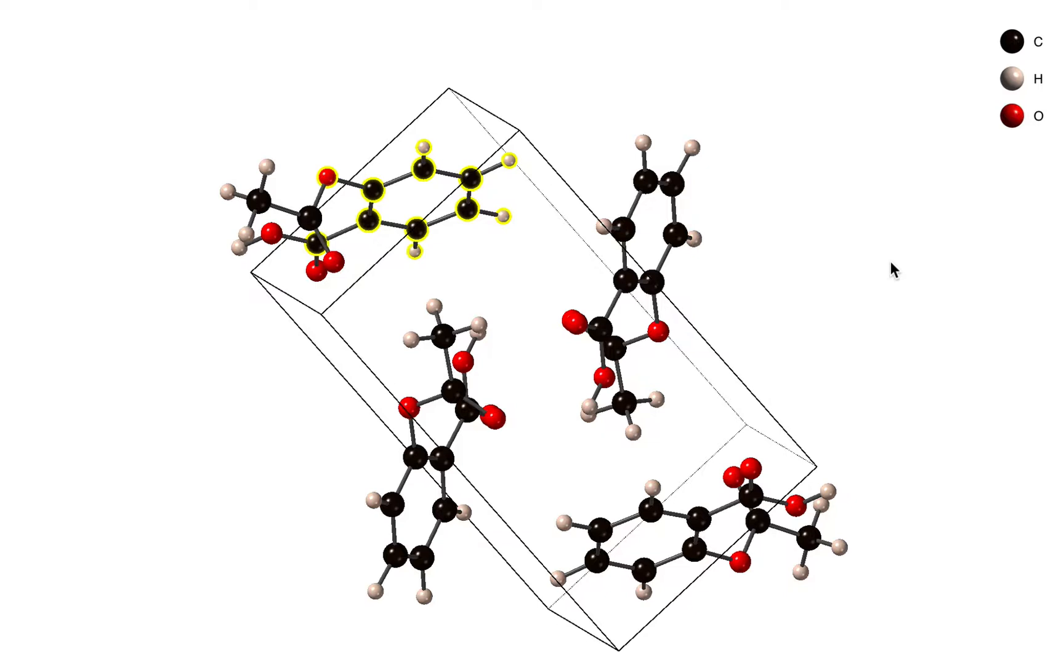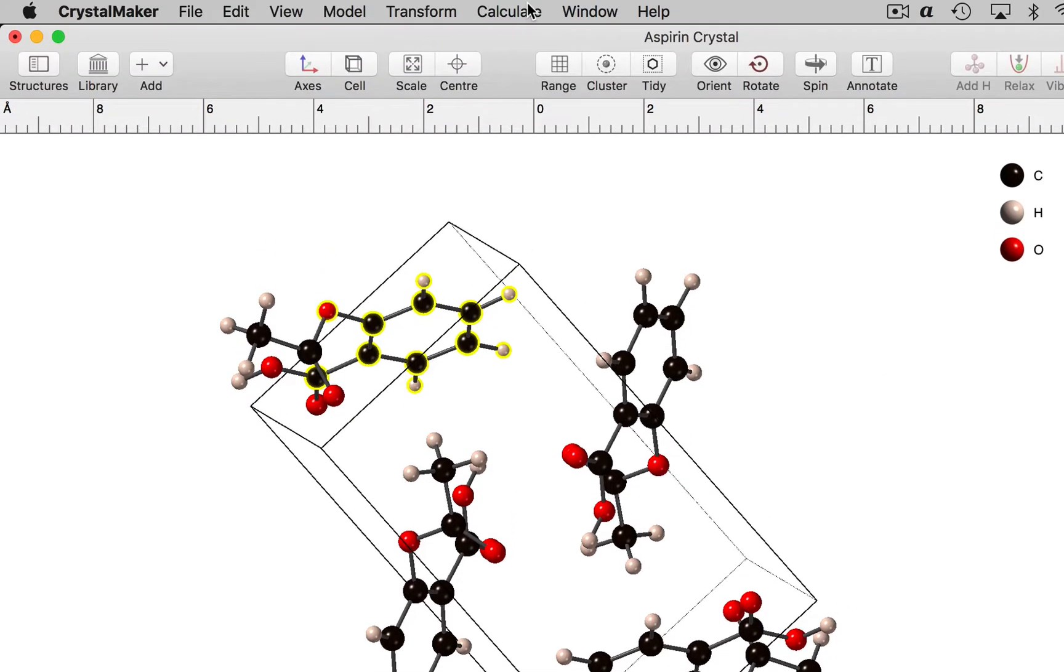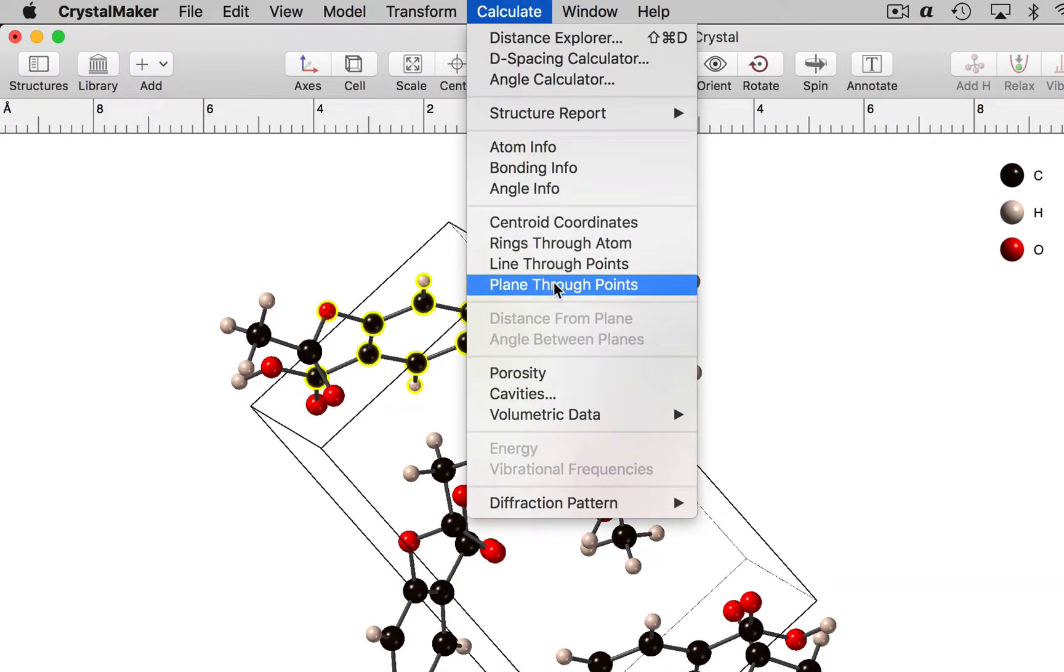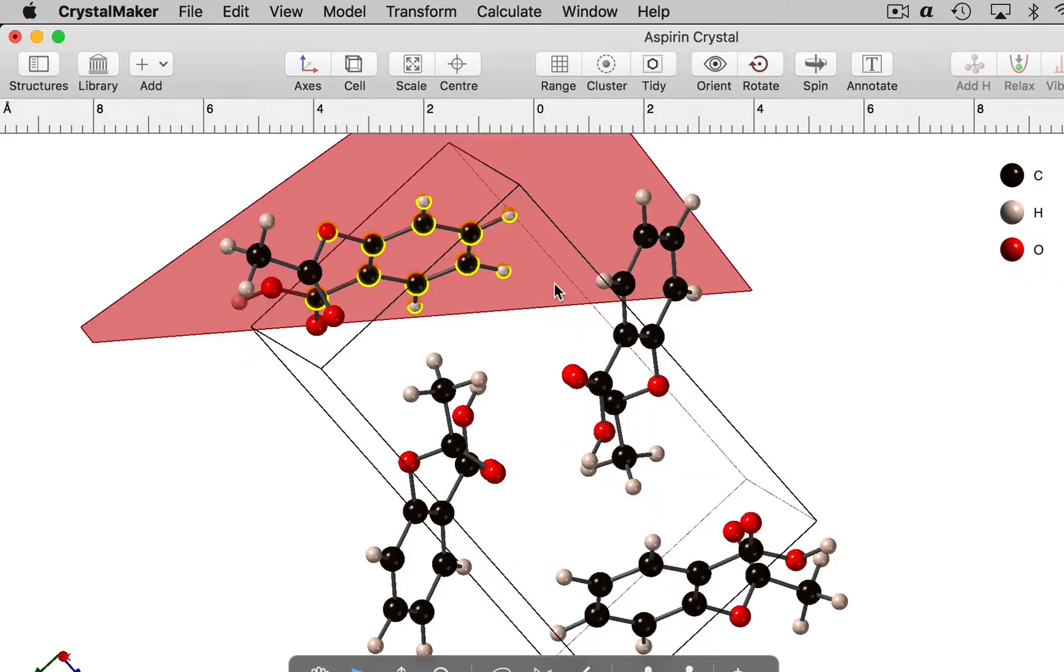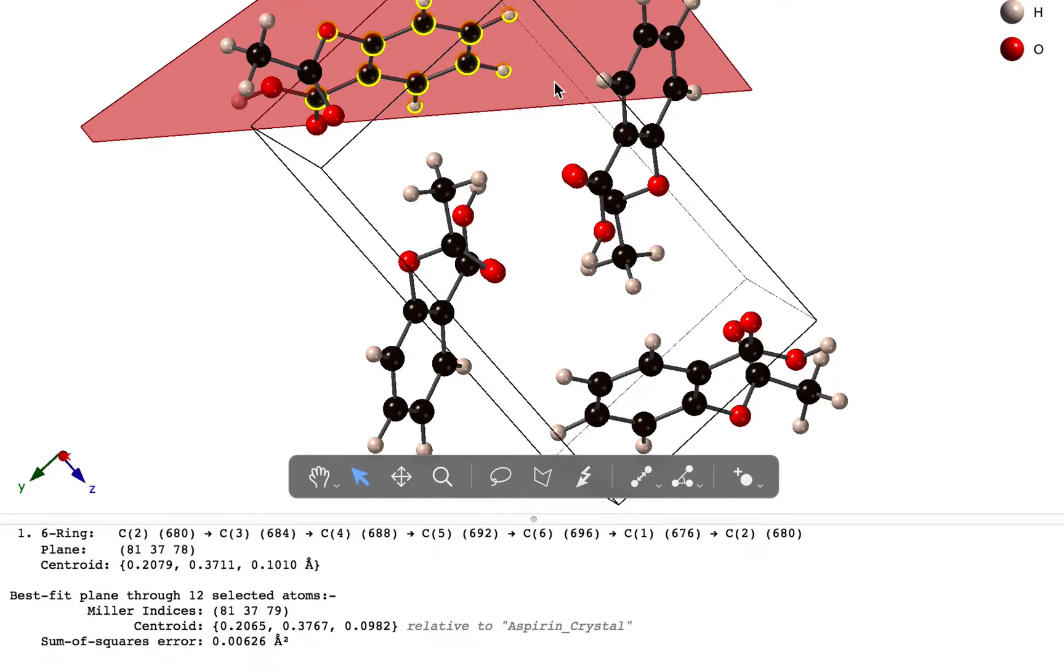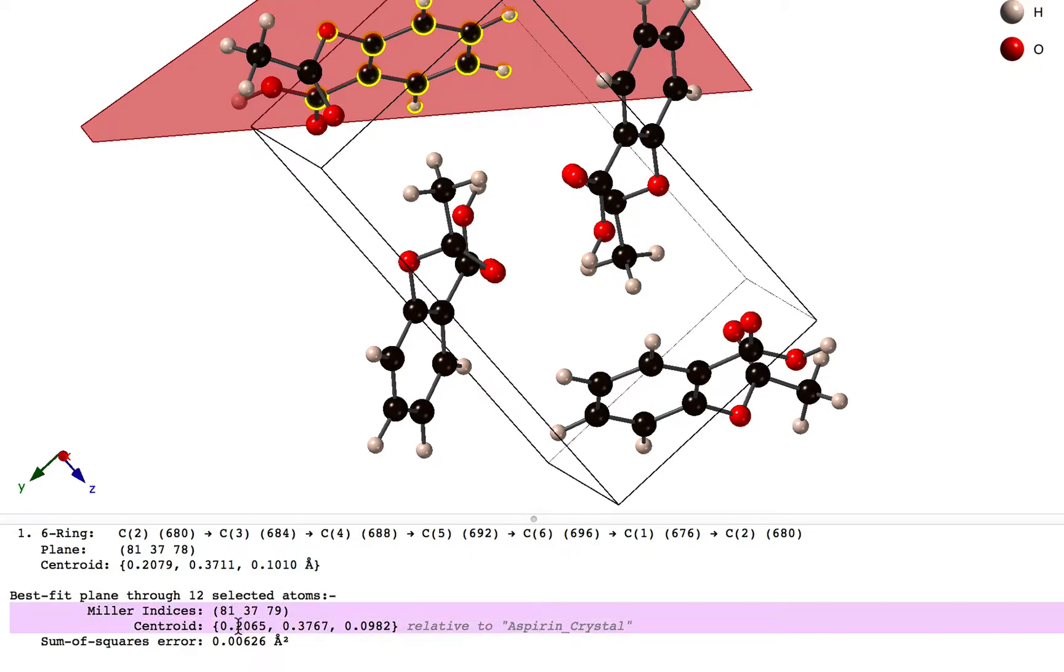Now I want to fit a plane through these atoms, so I'm going to use the calculate plane through points command. Now we have a best fit plane through those atoms. The parameters for the plane are described at the bottom of the screen. We have the indices, we have the centroid, and we have a sum of squares error.